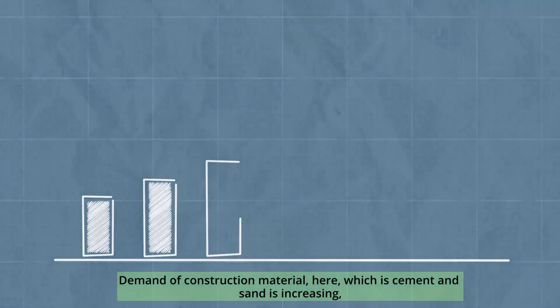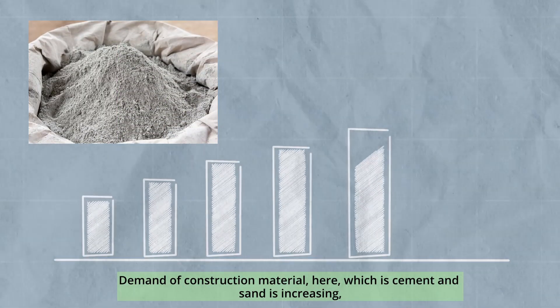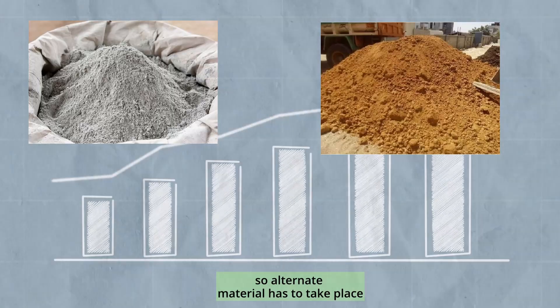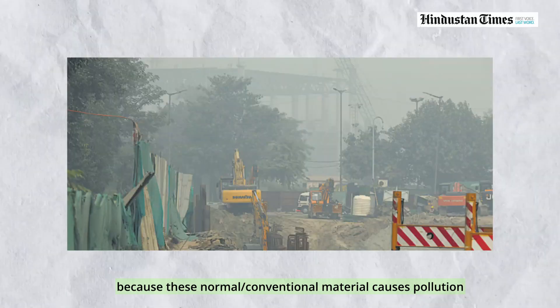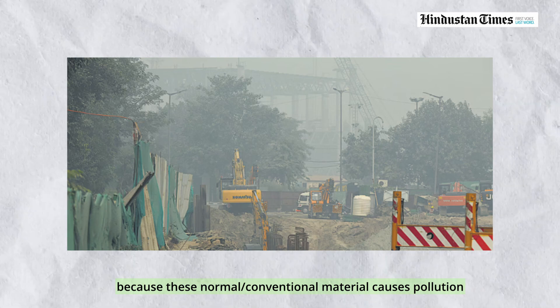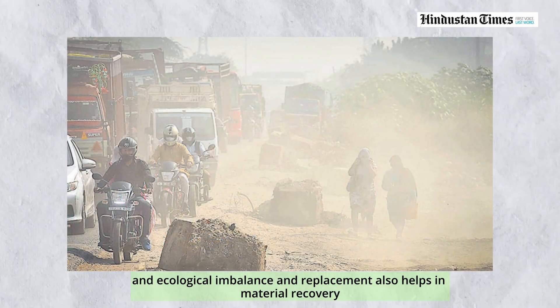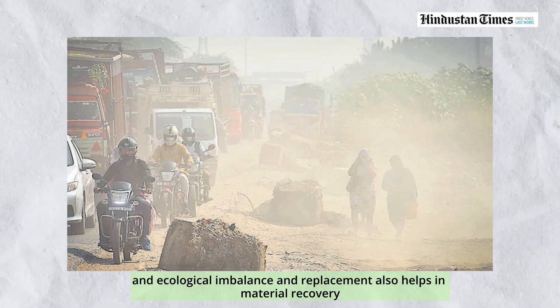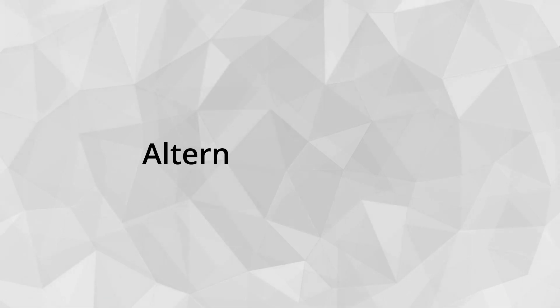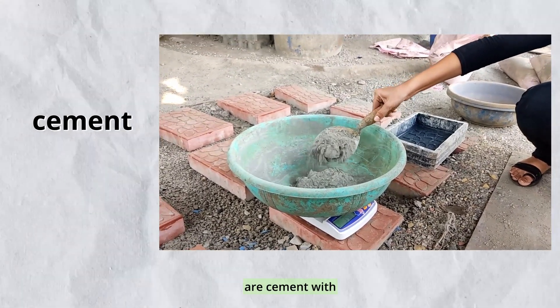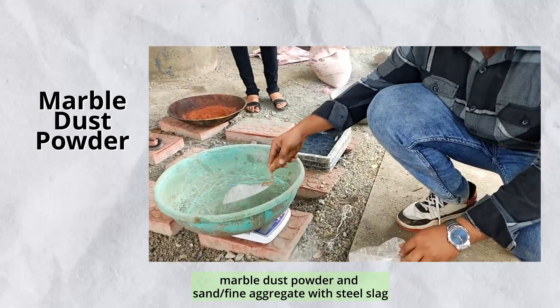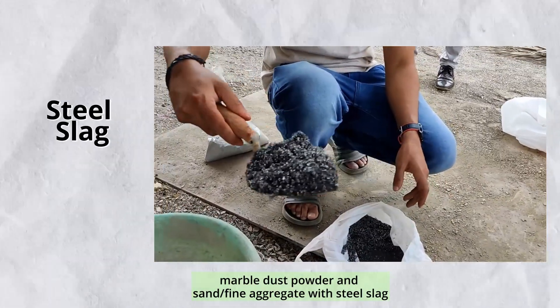Demand for construction materials — cement and sand — is increasing. So alternate materials have to take place, because conventional materials cause pollution and ecological imbalance, and replacement also helps in material recovery. The alternate materials we are using are: cement replaced with marble dust powder, and sand or fine aggregate replaced with steel slag.